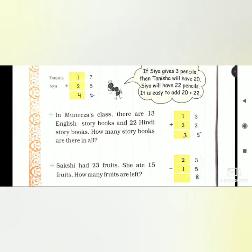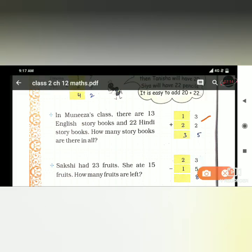If Munizah's class has 13 English storybooks and 22 Hindi storybooks, then total storybooks. We add 13 plus 22. 3 plus 2 is 5, 1 plus 2 is 3. So the answer is 35.